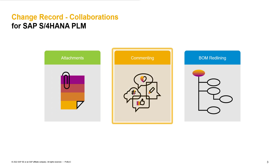The comment function allows users to communicate in the change record. Users can create comments and reply to them on change record header as well as on change item level. Comments can be easily searched for keywords and filtered for a time range. The comment functionality is available on every change record, so no special customizing is necessary.